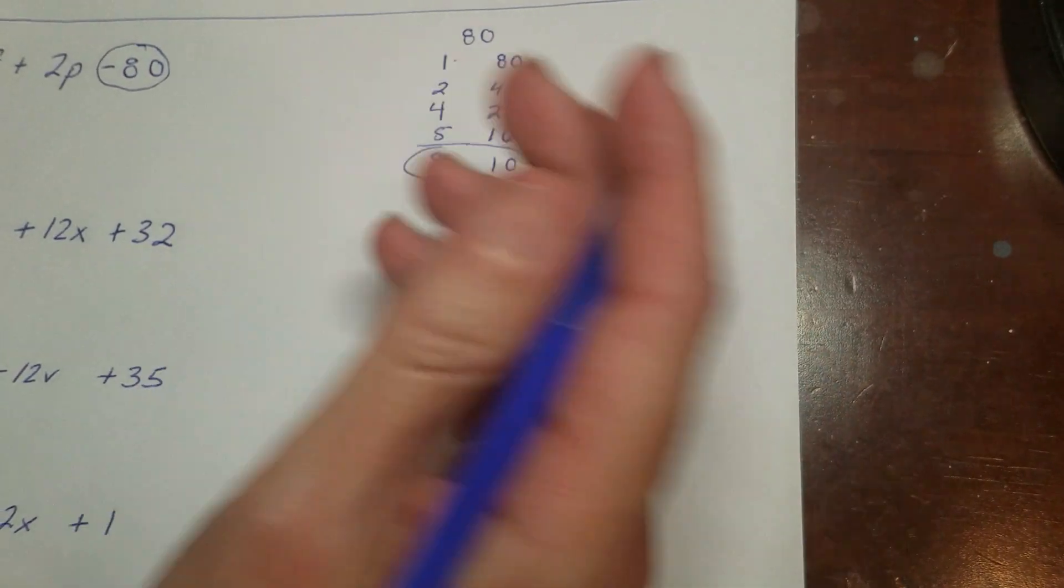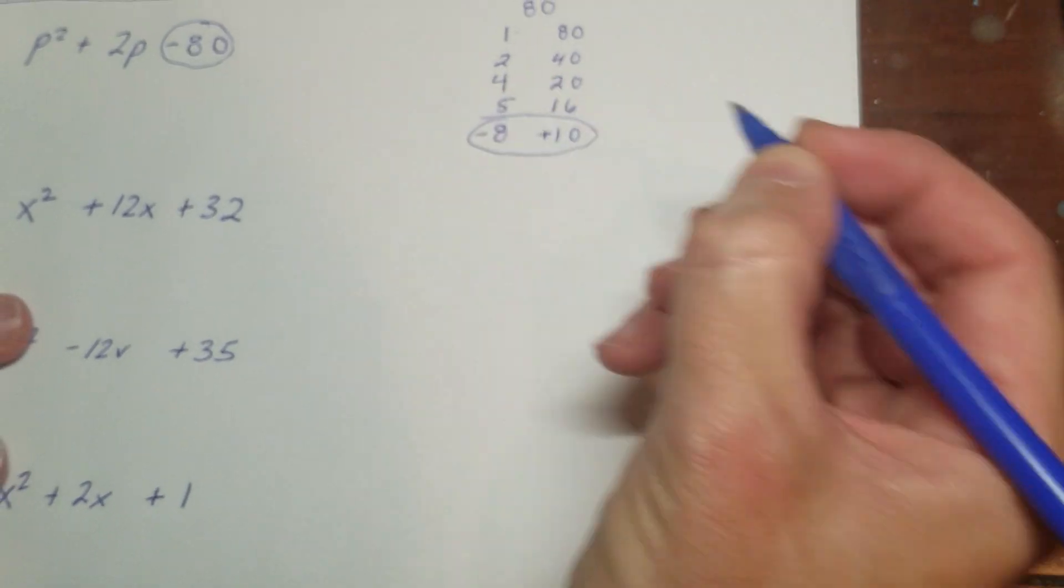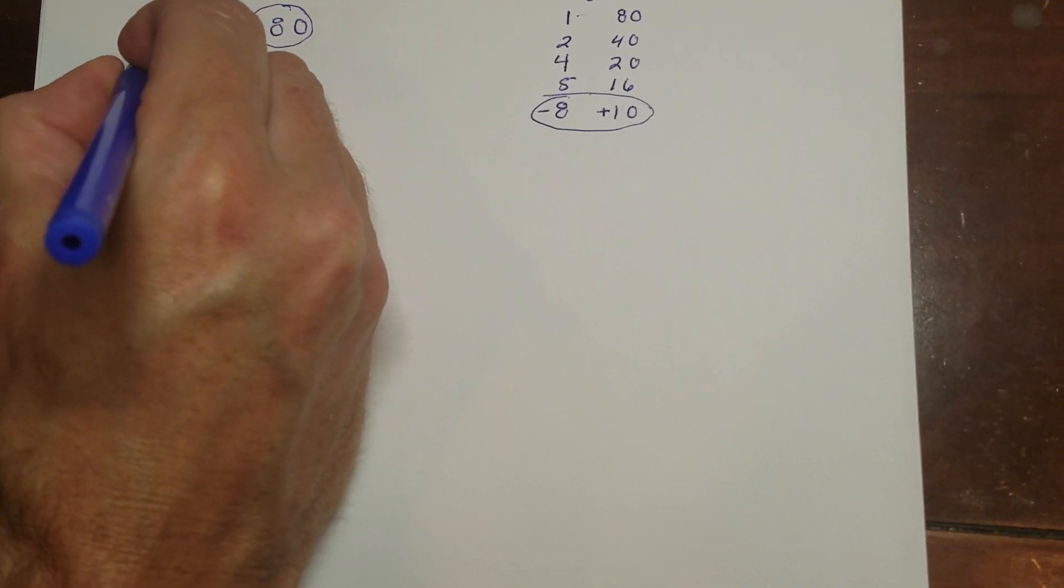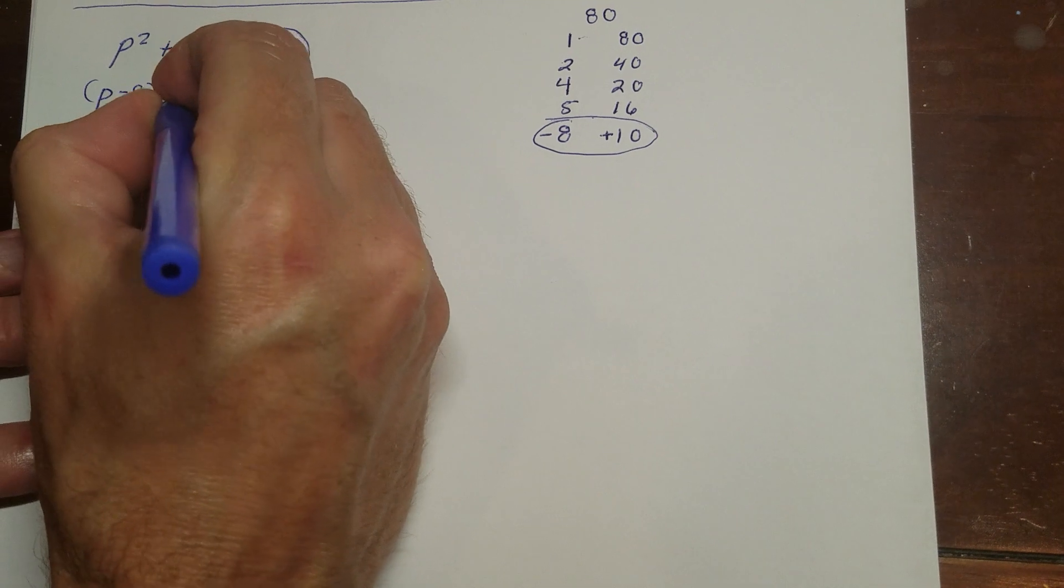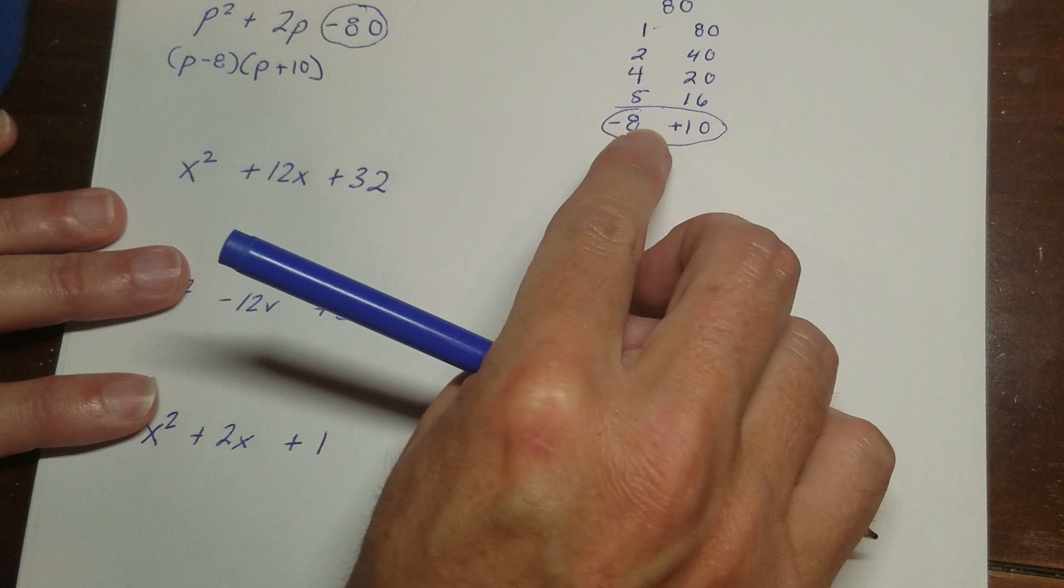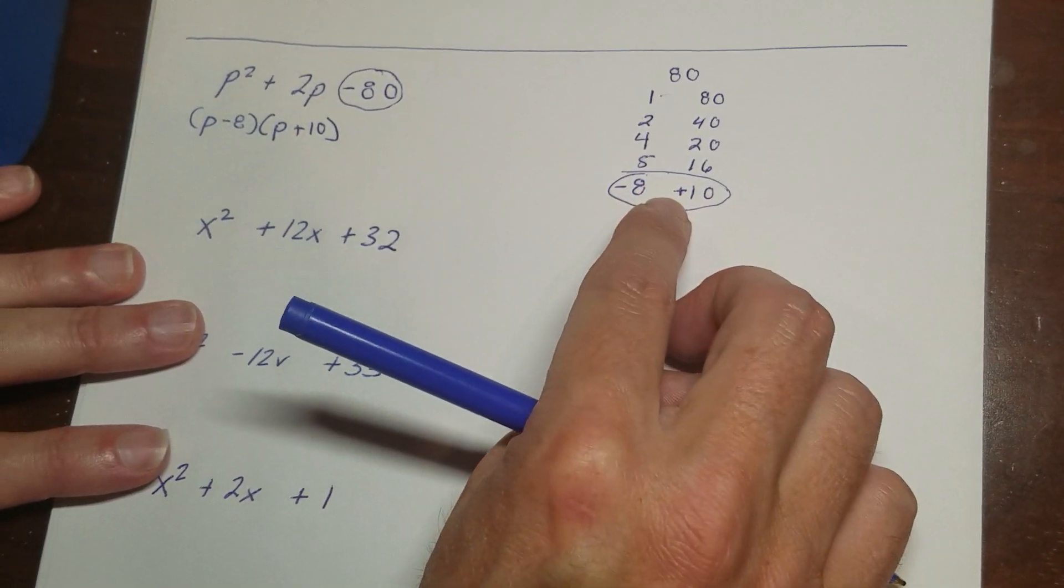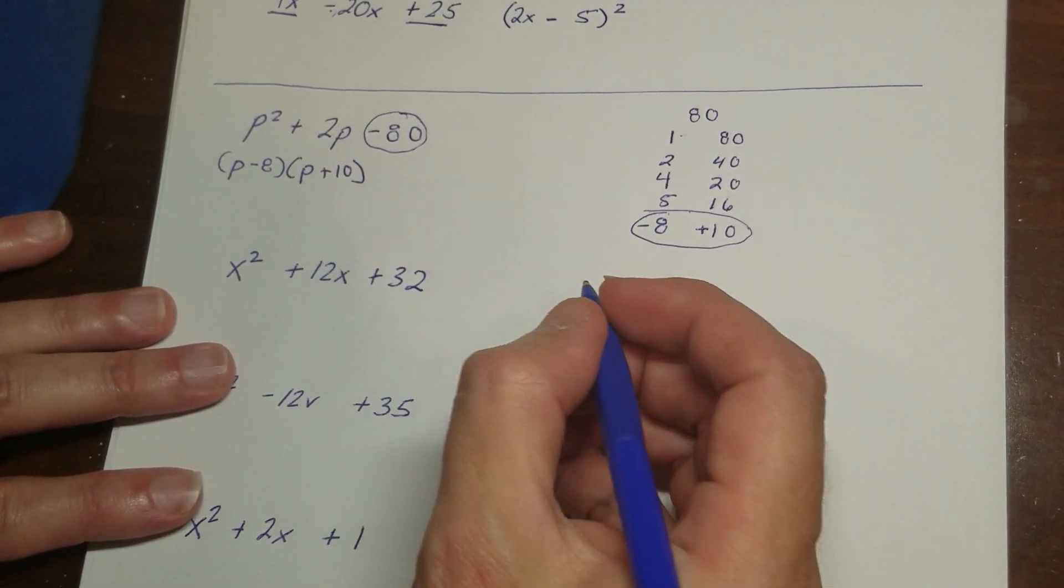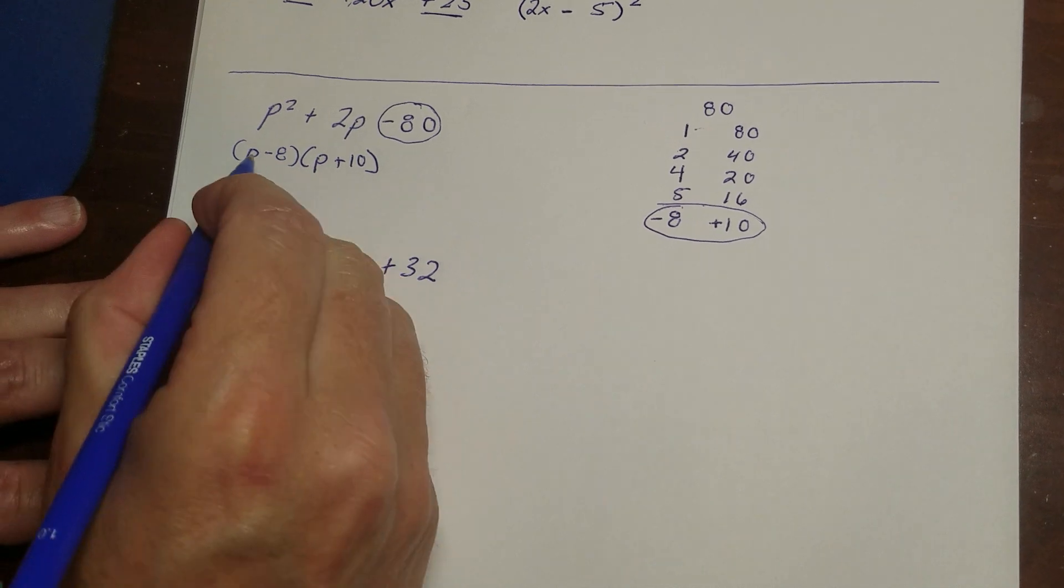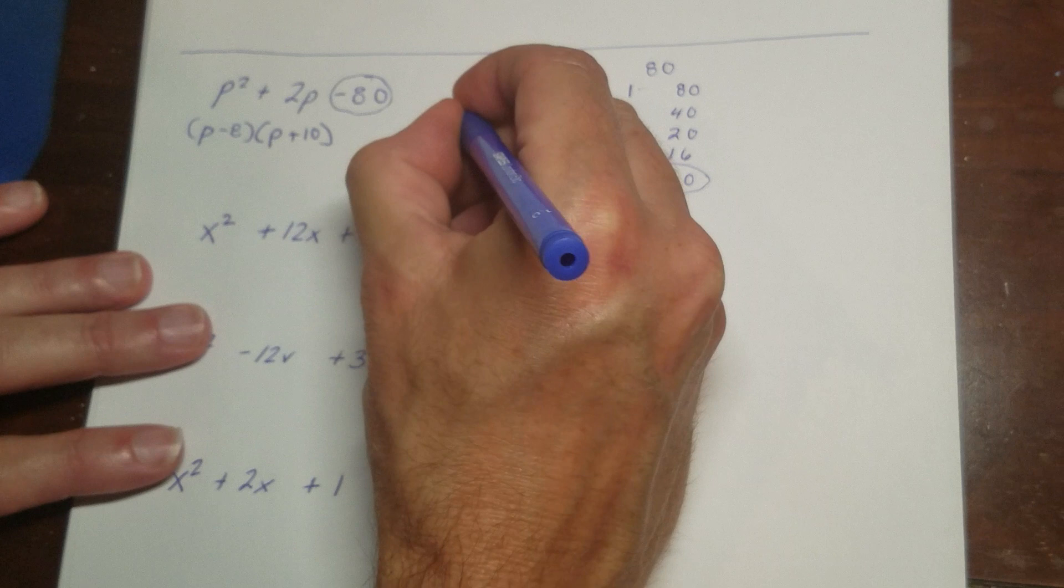So what I have to do is add these or subtract to make a 2. And the way that will work is I could use a positive 10 and a minus 8. So what I'm going to do is do (p - 8) and (p + 10). A lot of times what happens is people know which pair it is, but they don't know which one's positive and which one's negative. There's a little bit of a pattern I'll talk about in a second that you can do. But what you want to do is check it.